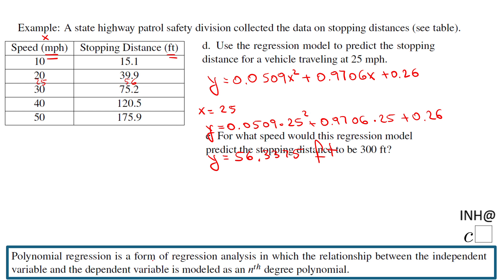So if a vehicle is traveling at 25 miles per hour, it's around 56 feet to stop, which kind of makes sense. 25 feet somewhere here between 20 and 30, yeah, it should be something between 39 and 75. You may want to check if your answer is reasonable.